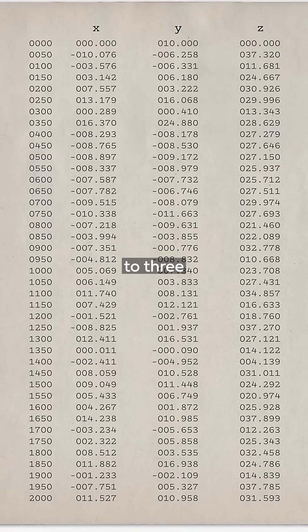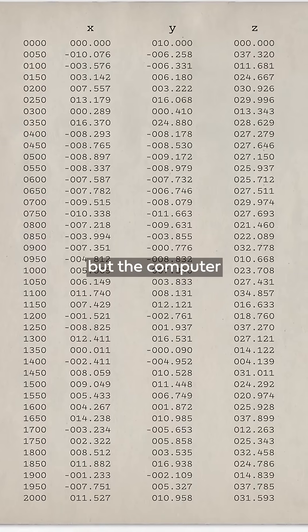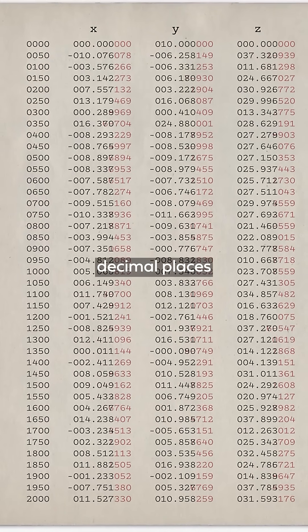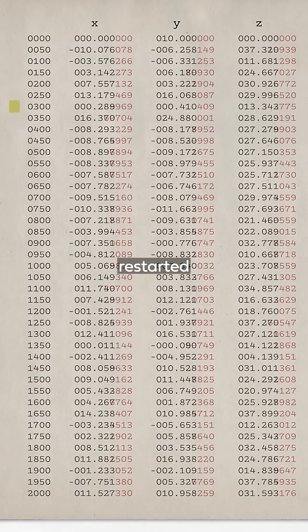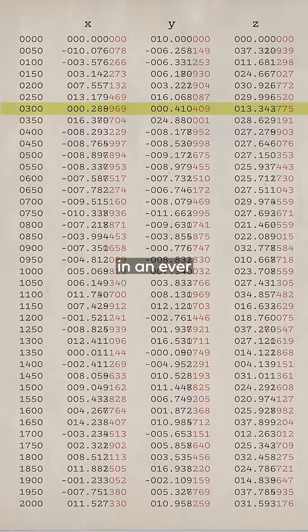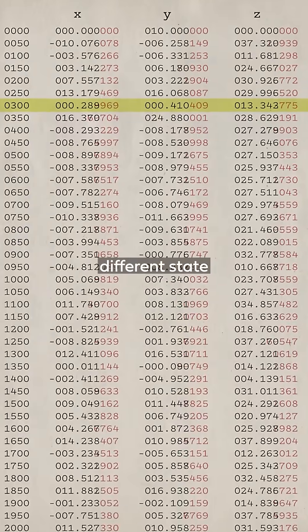Numbers were printed out to 3 decimal places, but the computer was calculating to 6 decimal places. So when he restarted the simulation with these numbers, he was starting the system in an ever so slightly different state.